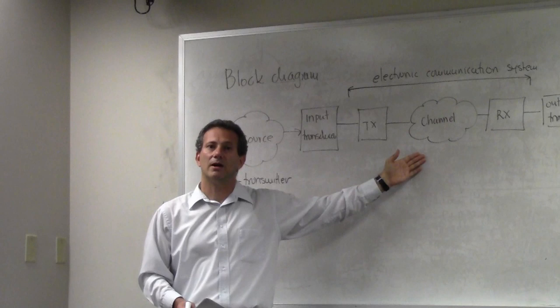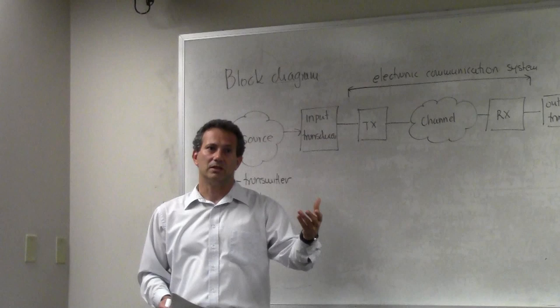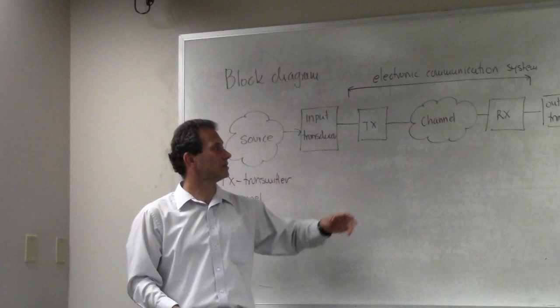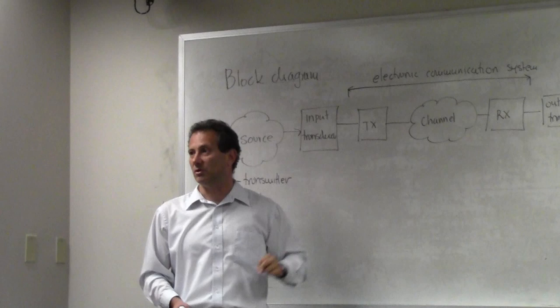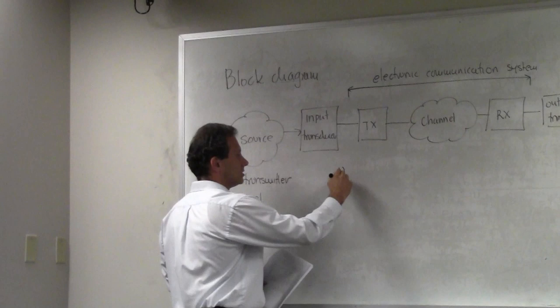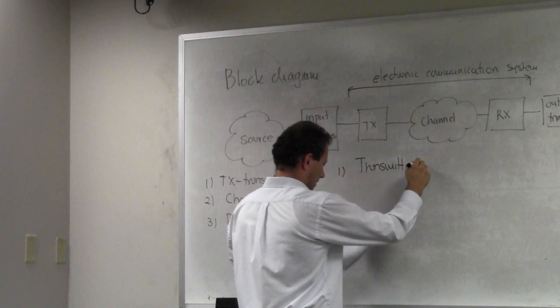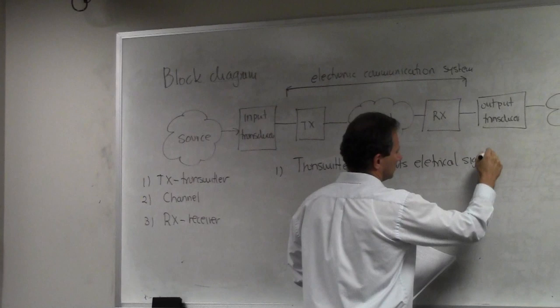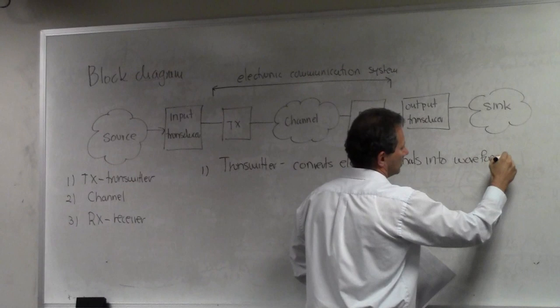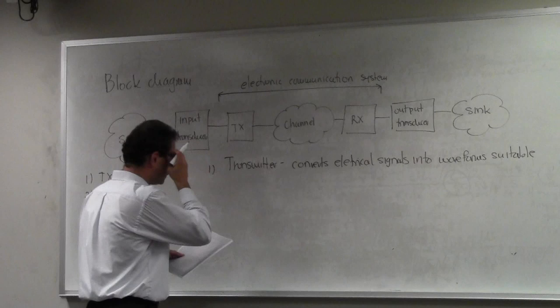If I need to transmit a speech signal over a wireless channel, can I transmit it directly? No — because at such low frequencies you would need huge antennas, and it's impractical. So the purpose of the transmitter would be to perform a frequency translation of the signal to a different frequency band suitable for transmission over the communication channel.